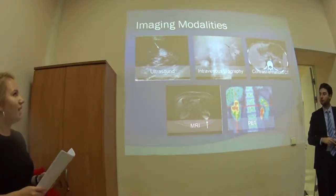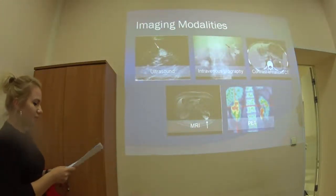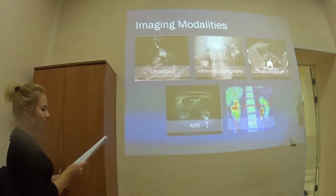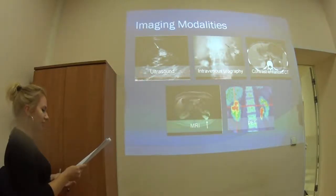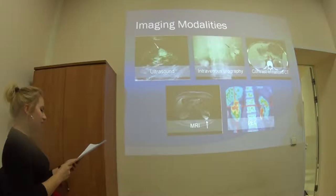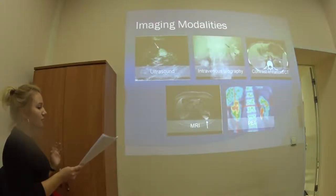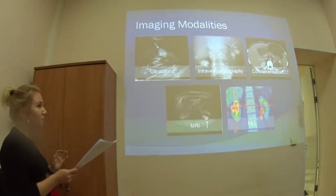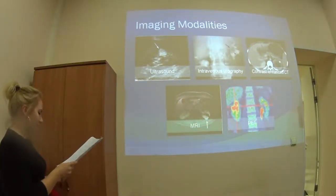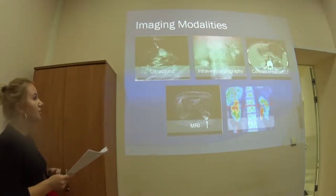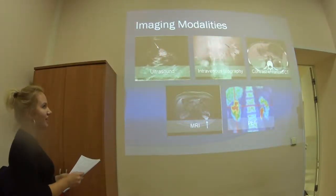Some words about imaging modalities. Starting with ultrasound — it's very frequently requested to assess the renal tract, though it's not as sensitive or specific as CT or MRI. Renal cell carcinoma has a wide variety of sonographic appearances. It may appear as a solid or particulate cystic mass, and may be hyper- or iso-dense to surrounding renal parenchyma. The tumor pseudocapsule is usually visualized as a hyperechoic halo.